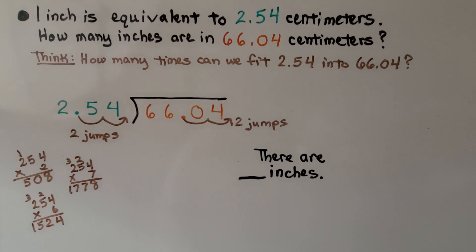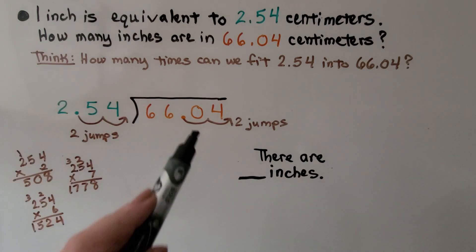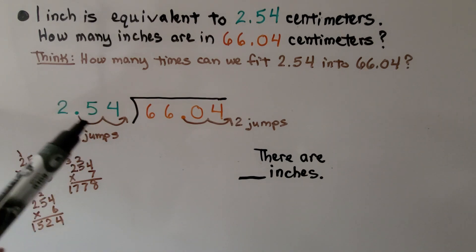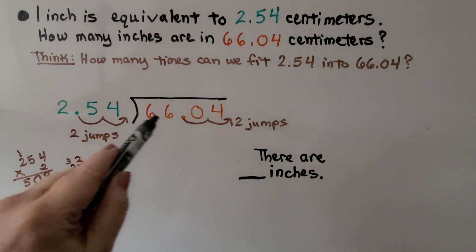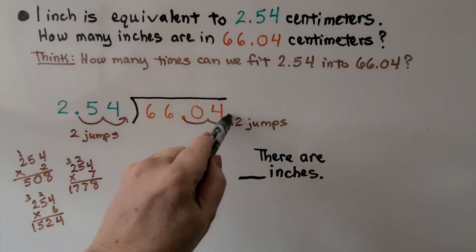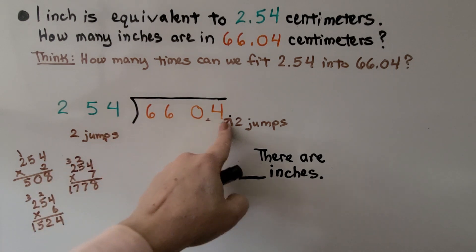This says 1 inch is equivalent to 2 and 54 hundredths centimeters. How many inches are in 66 and 4 hundredths centimeters? So we think: how many times can we fit 2.54 into 66.04? We write our problem and we need to move the decimal point two jumps to make this a whole number, so we move this two jumps as well. Our decimal point is now moved, and we're actually doing like whole numbers now — we're doing 6,604 divided by 254.